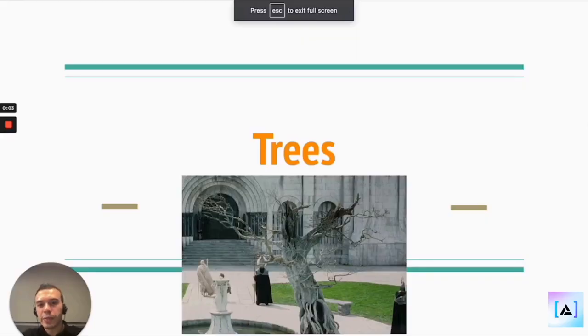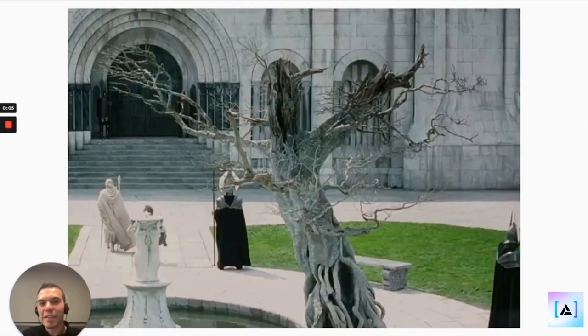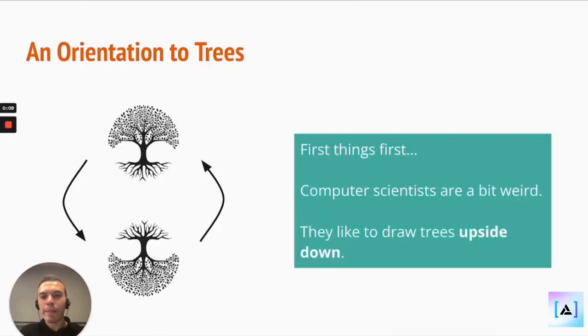Let's go over some trees basics. This is the white tree of Gondor for all the Lord of the Rings fans out there. First things first, computer scientists are weird. They tend to or like to draw trees upside down. So all the trees we see are upside down.